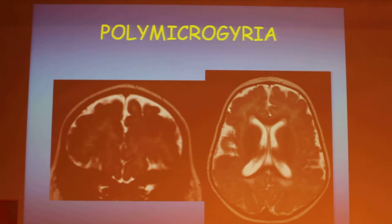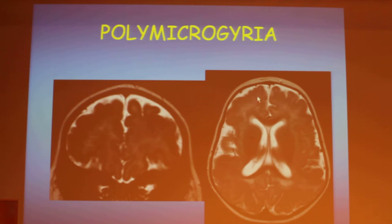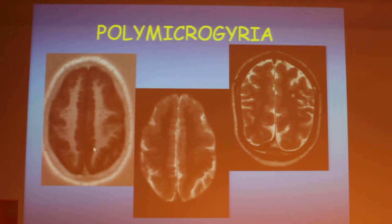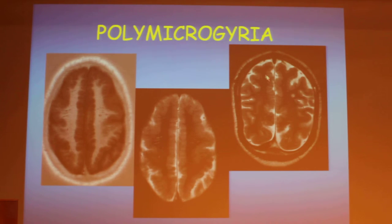It looks like a toothbrush or small villi. In this case it's only in the frontal region, seen nicely on coronal imaging. But it can be diffuse, where every single one of them is a tiny gyrus — with, again, another heterotopic gray matter.